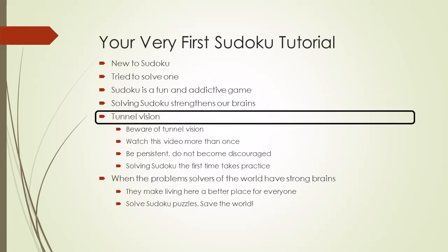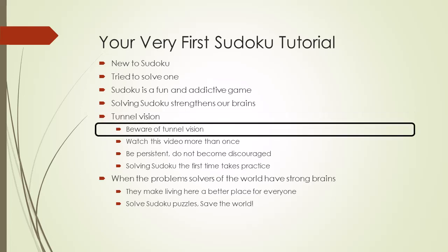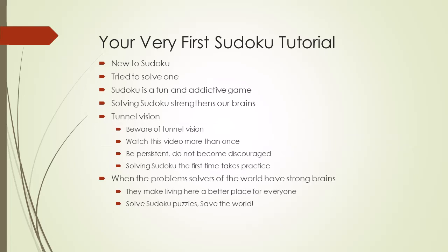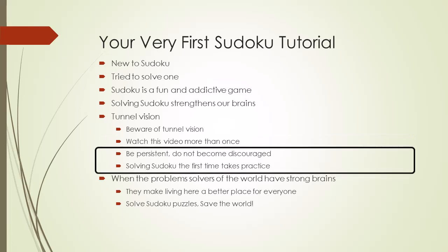Any time we learn something new, we will have a bit of tunnel vision. Tunnel vision causes our brains to have a narrow focus, which prevents us from absorbing all the new information. In order to relax and let your brain absorb what it needs to absorb, you may have to watch this video more than once. Do not be discouraged if you are having trouble solving your first or second Sudoku puzzle. Solving Sudoku puzzles the first few times takes a little practice.